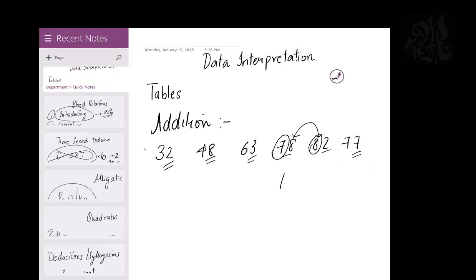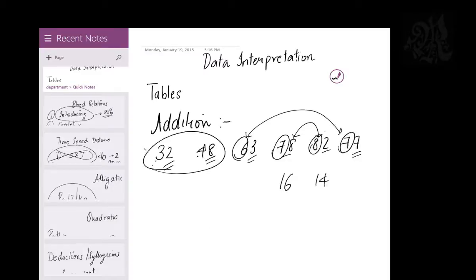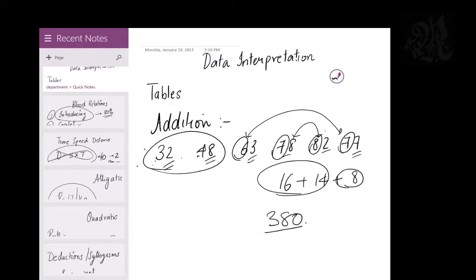If I merge 78 and 82, the units digits 8 and 2 give me a 0, and I carry 1. So the tens-place sum is 7 plus 8 = 15, plus 1 carried = 16. Merging 77 and 63: 7 plus 6 = 13, plus 1 = 14. Merging 32 and 48: 3 plus 4 = 7, plus 1 = 8. Now I have 8 plus 16 plus 14: 16 and 14 is 30, and 30 plus 8 is 38. So the answer is 380.